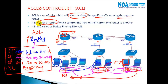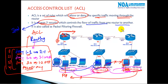We call ACL a Layer 3 security mechanism because it filters based on Layer 3 addresses — IP addresses — which controls the flow of traffic from one network to another. It is also called a packet filtering firewall because it filters packets as they pass through the router.